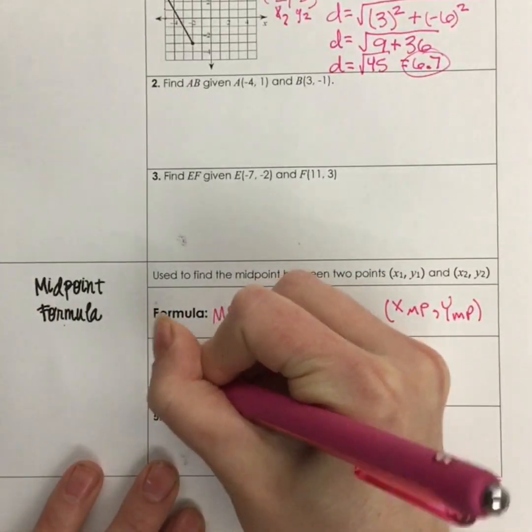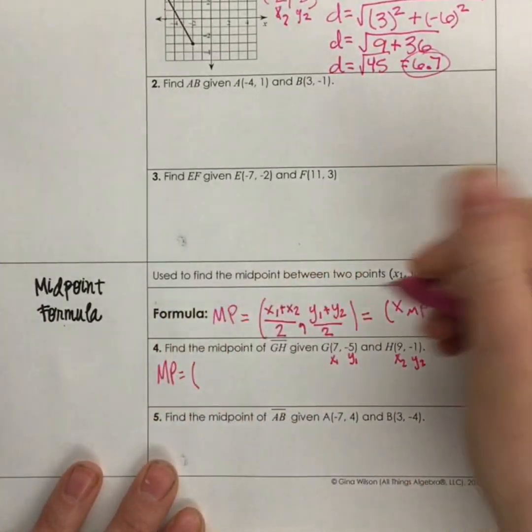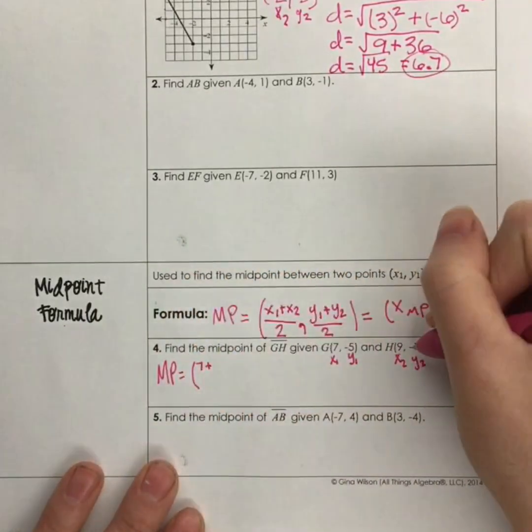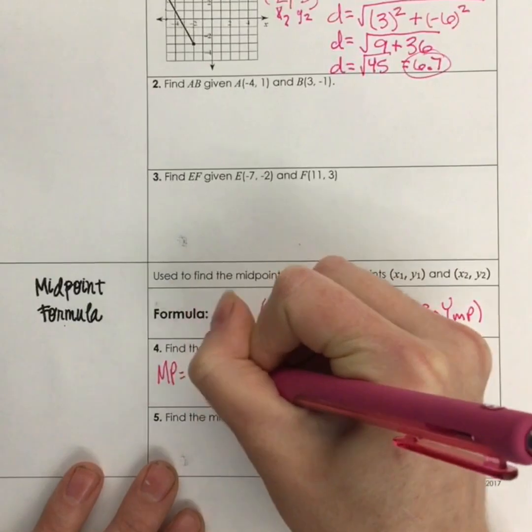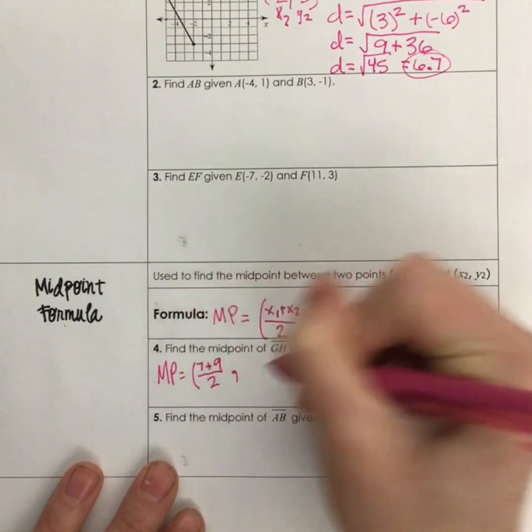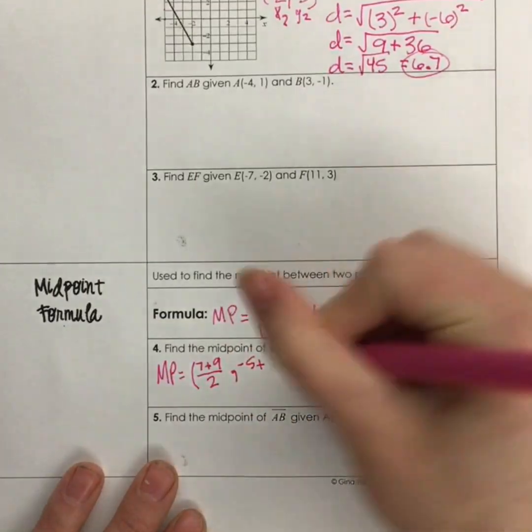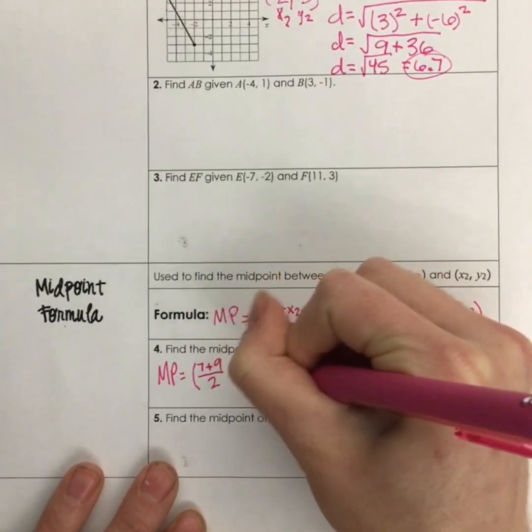So we'll plug these in, MP equals x₁, which is 7, plus 9, which is our x₂, divide that by 2, comma, negative 5, plus negative 1, divide that by 2.